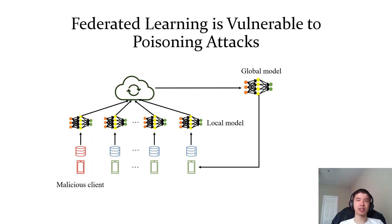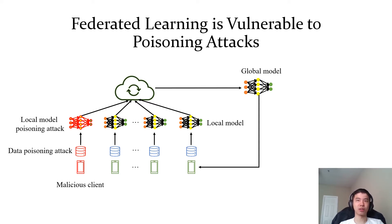A malicious client can poison its local data, which is known as a data poisoning attack. A malicious client can also directly poison its local model update sent to the server, which we call a local model poisoning attack.